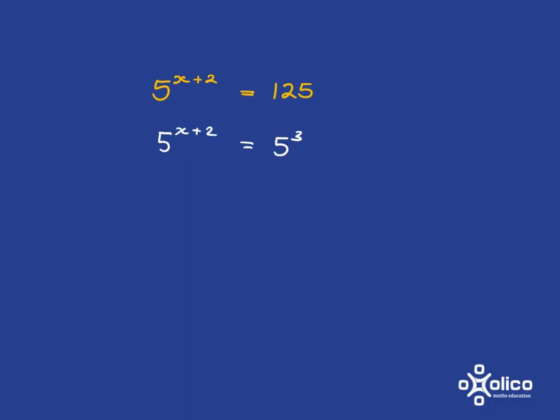Now, what do we have to do to make these two the same? Well, in order for them to be the same, this over here, and let me actually circle it in red, and this must be the same. As soon as those two things are the same, then 5 to the power of it is going to be the same.